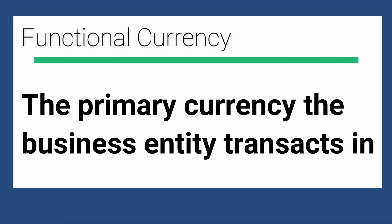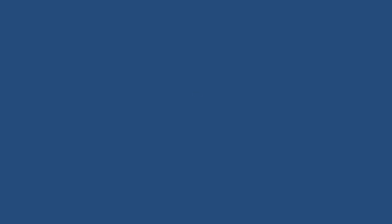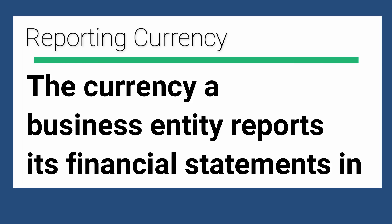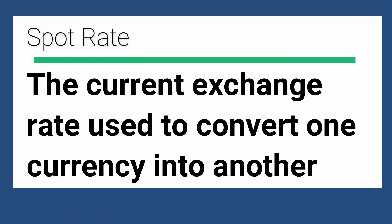We're going to quickly go over some foreign currency definitions because I'm going to use these terms a lot in this video. Functional currency is the currency the business is transacting in. Reporting currency is the currency that the financial statements are reported in. And lastly, the spot rate is the rate that you exchange one currency into another currency.